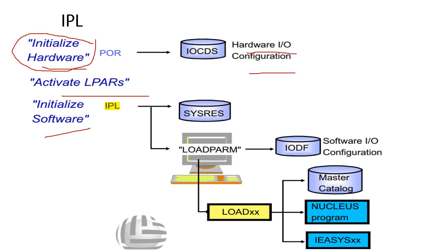Next is activating the LPAR. LPAR activation initializes each image defined in the selected IOCDS and assigns CPC central and expanded storage and an HPC ID. The next step is initialize the software. IPL is the operating system which determines the storage assignment, operates in 64-bit mode, and initializes the software and operating system until initialization completes.